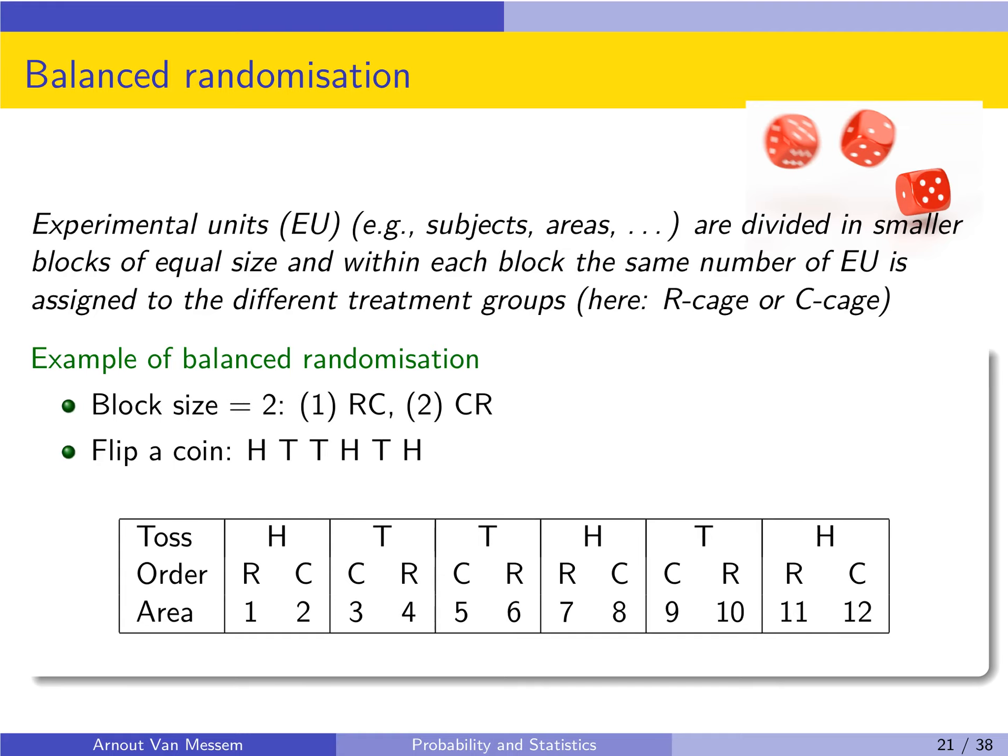To avoid such a situation we can apply balanced randomization. In balanced randomization the experimental units, in our case the areas, are divided in smaller blocks of an equal size and within each block the same number of experimental units is assigned to the different treatment groups. So in our case we have the R cage and the C cage and what we can do is make block sizes of two. And so in each of the blocks you will definitely assign one R and one C. So we had 12 areas, basically we now make six areas and in each area we place two cages, one R cage and one C cage.